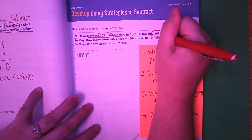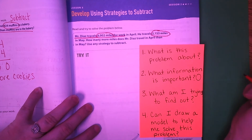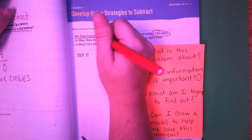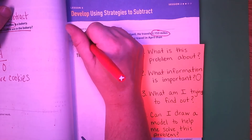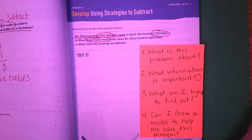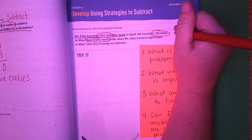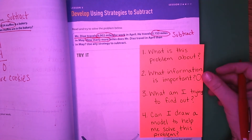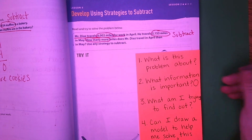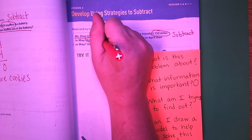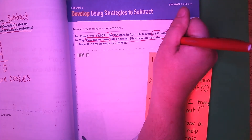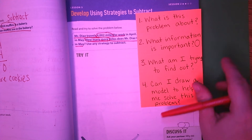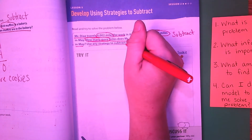What information is important? Well, four thousand two miles is important for April, and two thousand one hundred and fifty-three miles in May is also important. Then we also have 'how many more' — that is very important because it tells us this is going to be a subtraction problem. What are we trying to find out? We're trying to find out how many more miles does Mr. Diaz travel in April than in May.